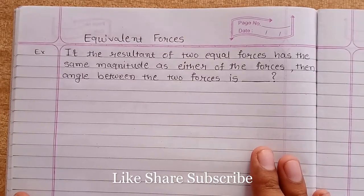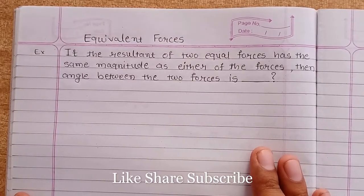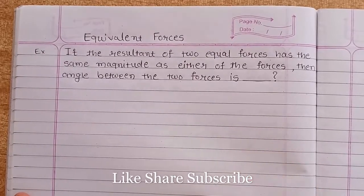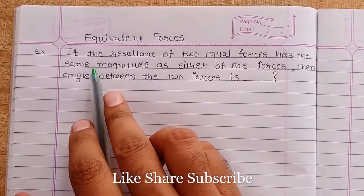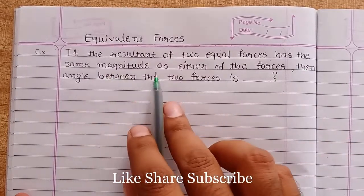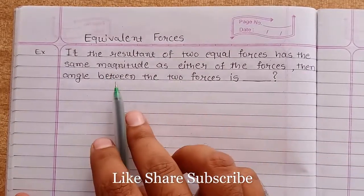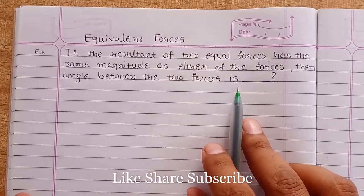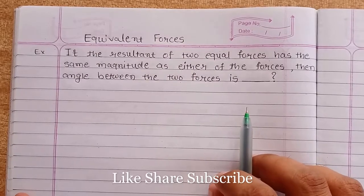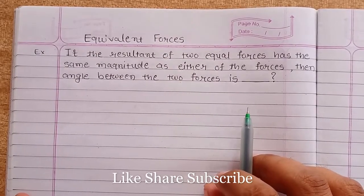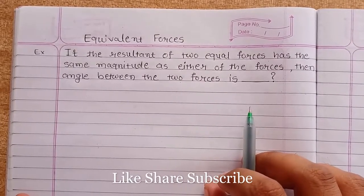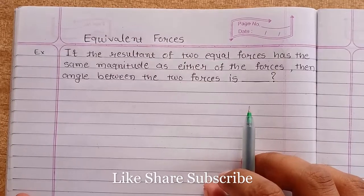Hello friends, welcome back to the channel. In this video we will solve one problem related to the equivalent of forces. The problem statement: if the resultant of two equal forces has the same magnitude as either of the forces, then what is the angle between the two forces? We have to find what the angle should be if the magnitude of the resultant is the same as one of the forces.